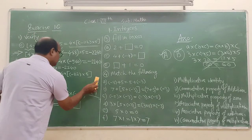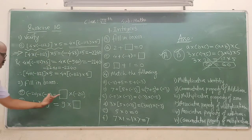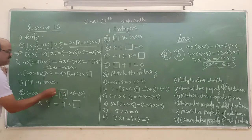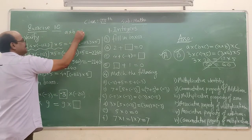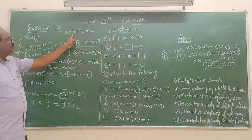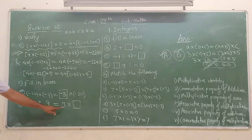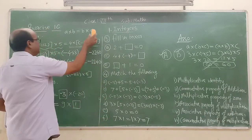Let us move further. Fill in the box is the next question. Here students, after observing this, we come to know very easily that minus 3 will be the answer. But students, you should know that this is the commutative property under multiplication — A times B equals B times A. For example, 1 into 9 equals 9 into 1. You can call the remaining ones as homework.